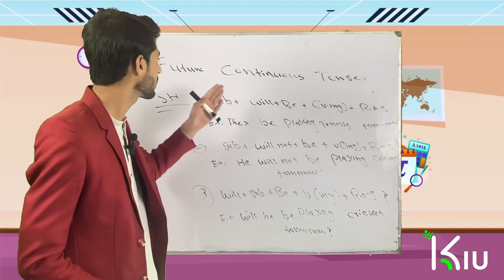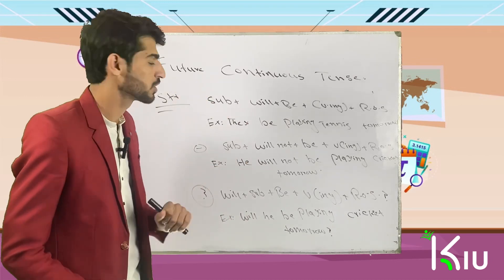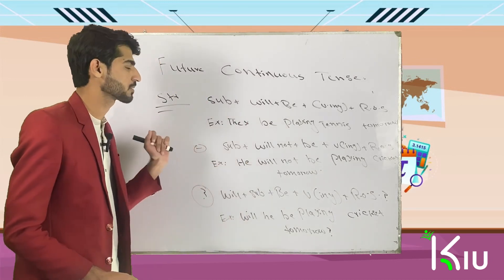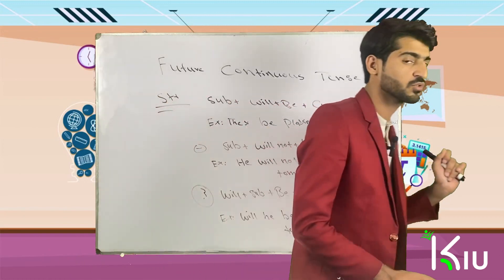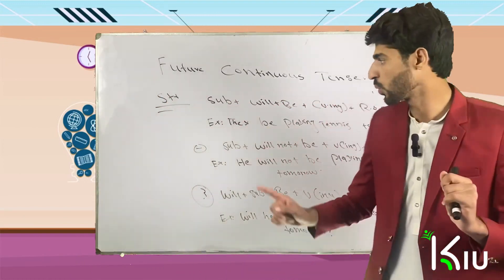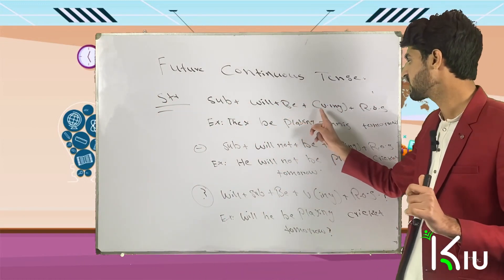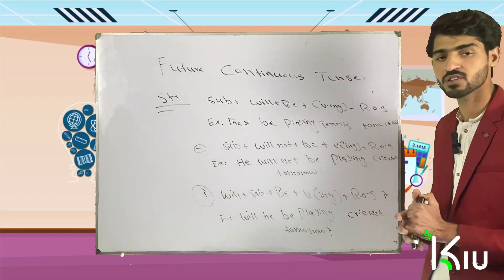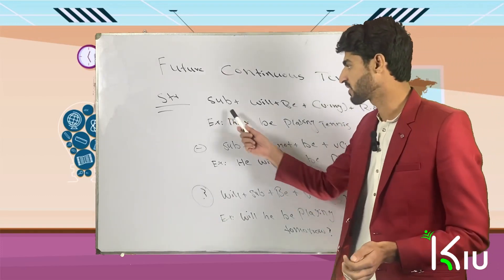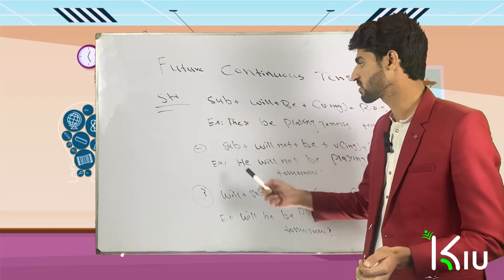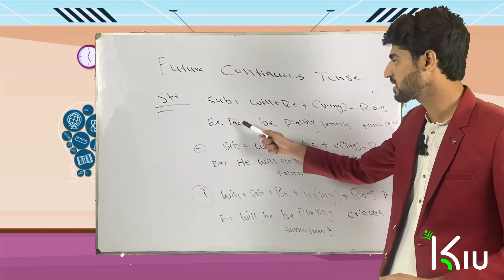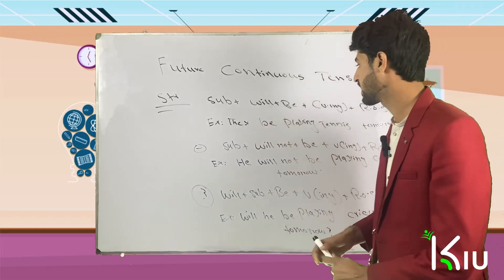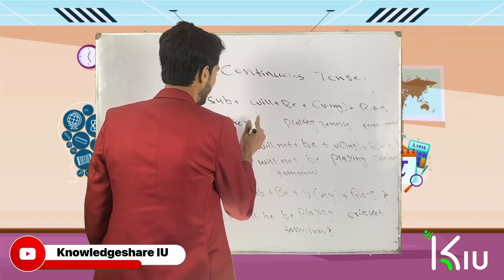If you want to make positive sentences using future continuous tense, first of all we will put the subject, then 'will be,' then verb-ing, and then the rest of the sentence. For example: subject is 'they,' then 'will be,' so — they will be...